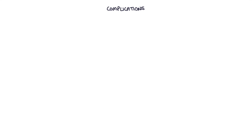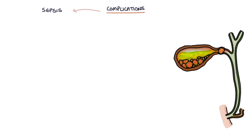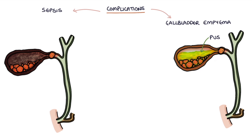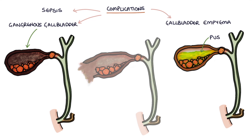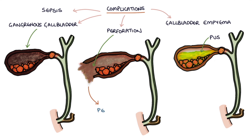There are four complications of acute cholecystitis to remember: sepsis, gallbladder empyema (pus in the gallbladder), a gangrenous gallbladder, and perforation of the gallbladder leading to peritonitis.